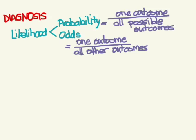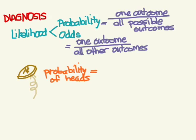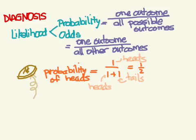First, let's talk about a coin flip. We want to calculate the probability that the coin lands heads. The one outcome we're looking for is heads—there's only one way to get heads. All possible outcomes are either heads or tails. So 1 over 1 plus 1 is 1/2, or 50%.